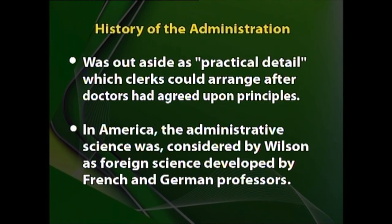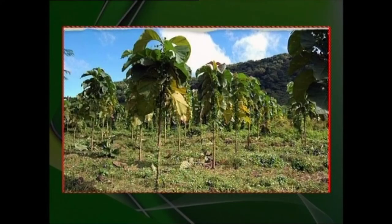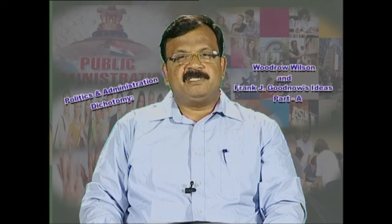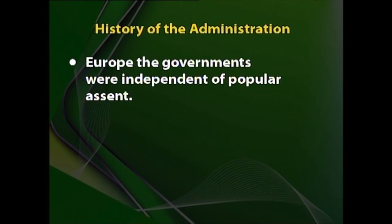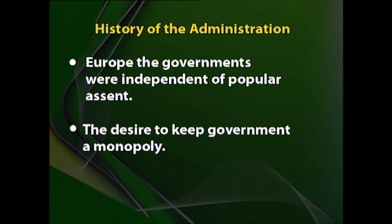In America, the administrative science was considered by Wilson as a foreign science, developed by French and German professors. In this background, Woodrow Wilson argues that we have to develop a science of administration according to our own needs, our country's environment, and other things. Administration is different from country to country; each country's administrative science depends upon its nature of state and the demands of the people based on its constitutional framework. He further explained that the reasons for the growth of administration in European countries were two: one, governments were independent of popular assent, and second, the desire to keep government a monopoly.